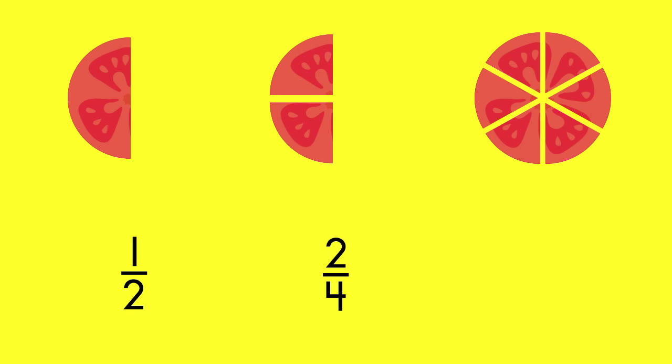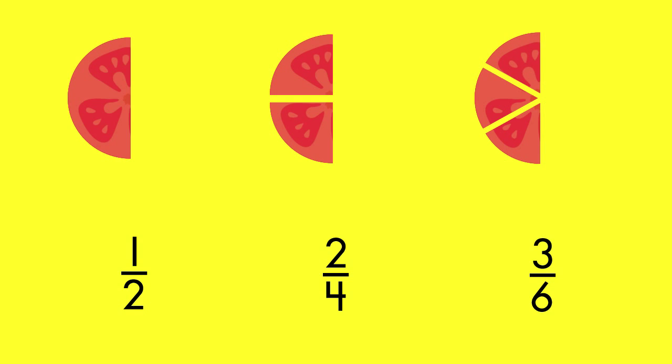A whole can be divided into parts in many different ways. You can cut a tomato slice into two equal parts, four equal parts, or six equal parts. Notice that the parts one-half, two-fourths, and three-sixths are all the same size. Even though they are divided into different pieces, they name equal parts of the same whole. This means that all these fractions are equal, or equivalent.